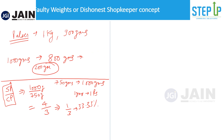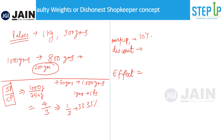Sometimes problems are more complicated — they may include concepts like discount along with faulty weights. So it could be a mix of faulty weights plus marking up and discounting, and they'll ask what the final total effect is. For example, let's say goods are marked up by 10%, there is a discount of 10%, and the faulty weight shows 1000 grams for only 800 grams. We always write the result in SP upon CP format.